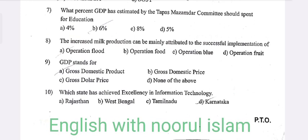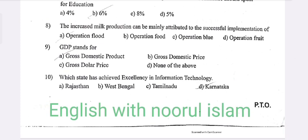Seventh question: The percentage of GDP that a Muslim Mother Committee — as estimated by the Task Force — should spend per year is — option B, six percent.